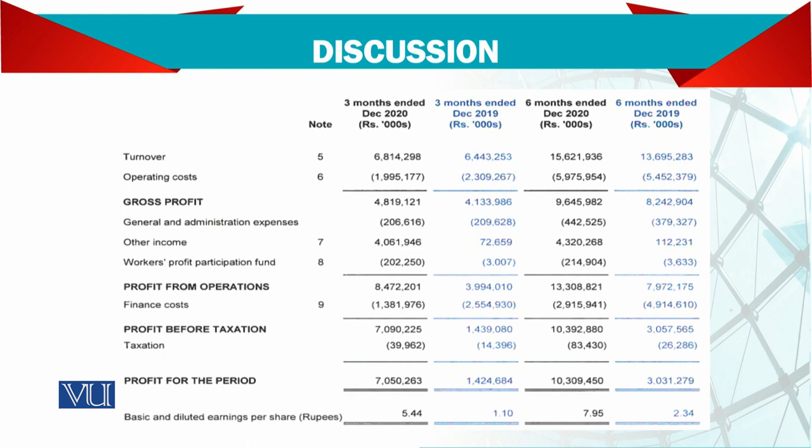You can see here, I am just rounding the figures. Turnover is almost 6 million to 6.8 million, so it is not much difference, but there is still a change. If you look into the profit figure, 4 million to 4.8 million — slightly the profit has also improved. As far as general expenses are concerned, they are slightly reduced — almost the same.